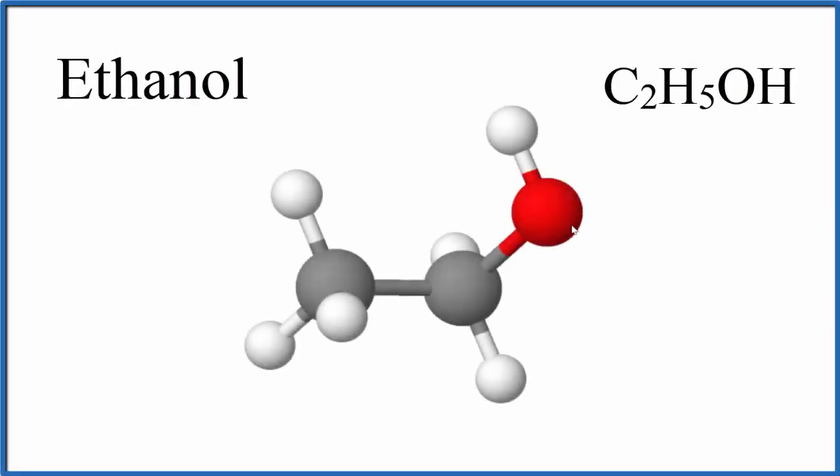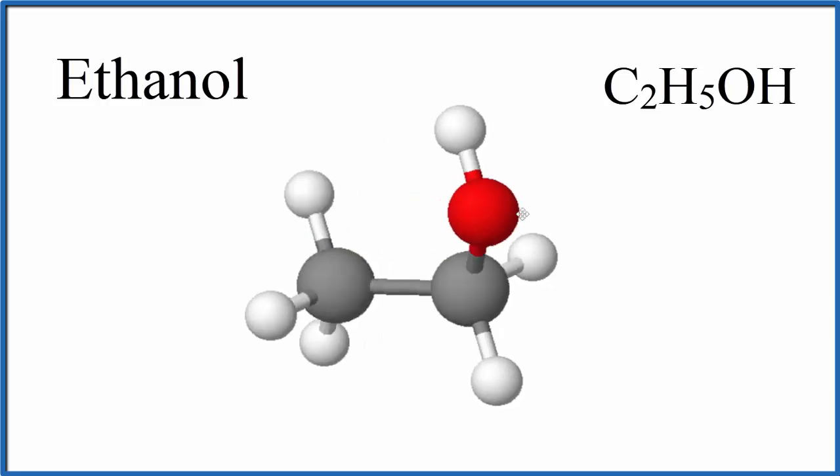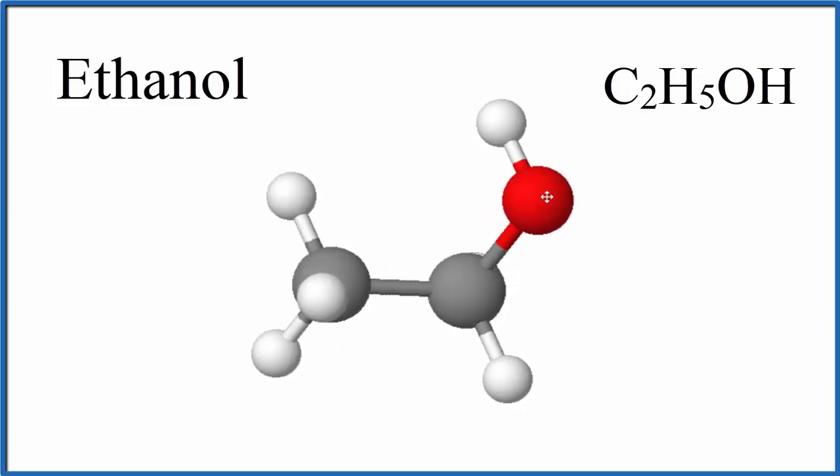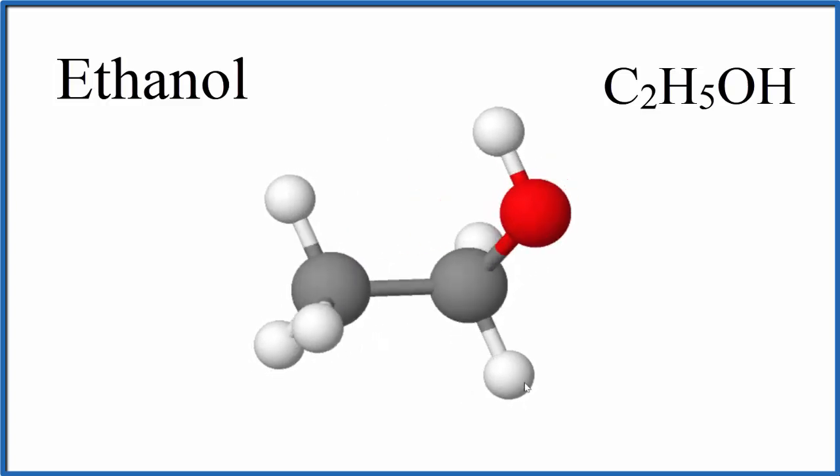In this video we'll look at hydrogen bonding in ethanol. This is C2H5OH. The carbons are the gray, whites are the hydrogen, red that's our oxygen.